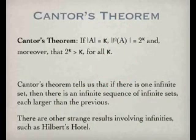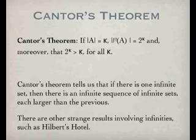That turns out to be a very, very deep and generalisable result, which brings us to Cantor's theorem. He showed that if you've got some set with cardinality kappa, then the power set will be two to the kappa. And here's the kicker: two to the kappa is always greater than kappa. So what that means is, if you've got a set and you form the power set of it, the size of the power set will always be bigger than the first. We just saw that in that one little example.